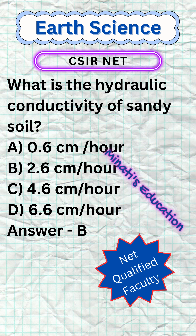Here's why. Sandy soil has large pores between the grains, allowing water to flow through easily. This translates to a higher hydraulic conductivity compared to finer textured soils like clay. However, factors like grain size distribution, packing density, and organic matter content can influence the exact value. For instance, coarser sands will have higher conductivity than finer sands due to larger pore spaces.